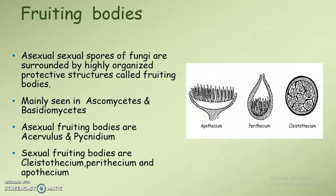Next we can see fruiting bodies. The asexual and sexual spores of the fungus are surrounded by highly organized structures called fruiting bodies, whose function is to protect these spores. They are mainly seen in Ascomycetes and Basidiomycetes. Asexual fruiting bodies include acervulus and pycnidium, while sexual fruiting bodies include cleistothecium, perithecium, and apothecium.